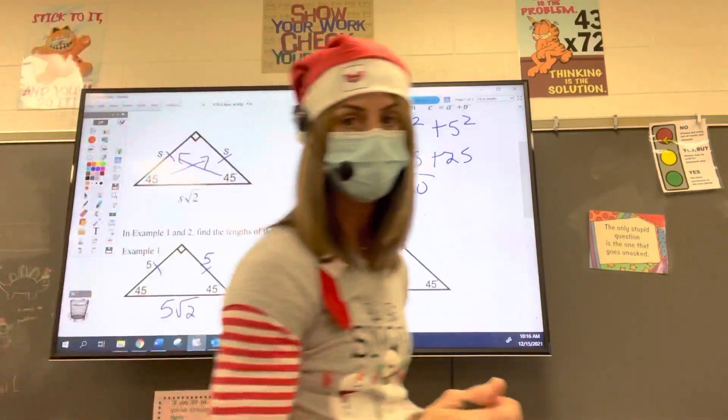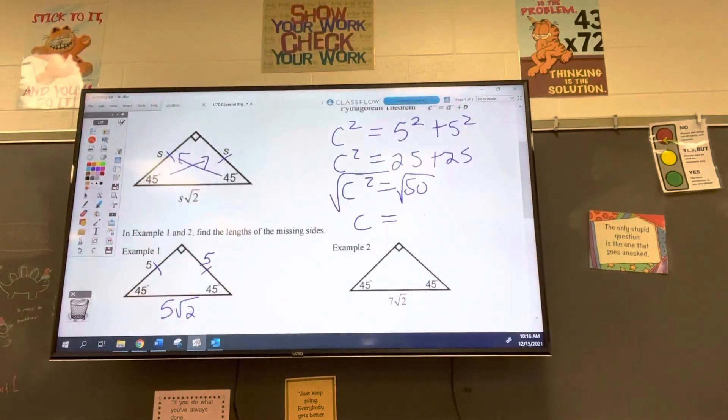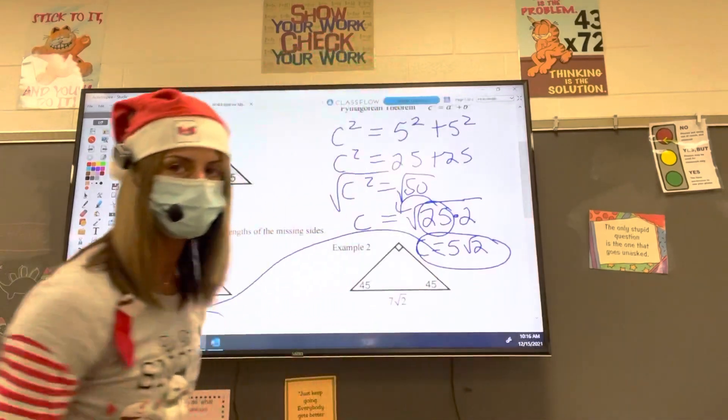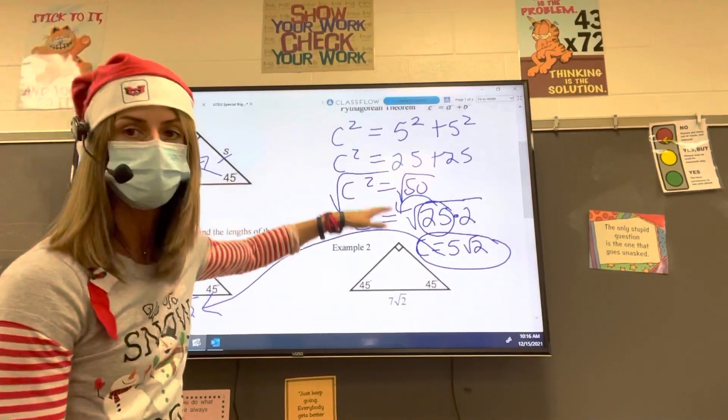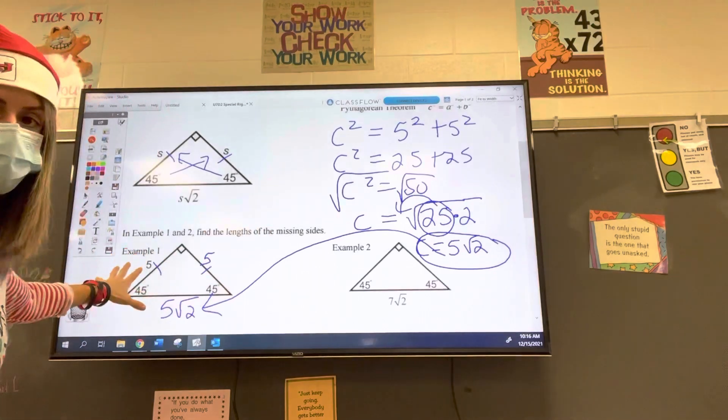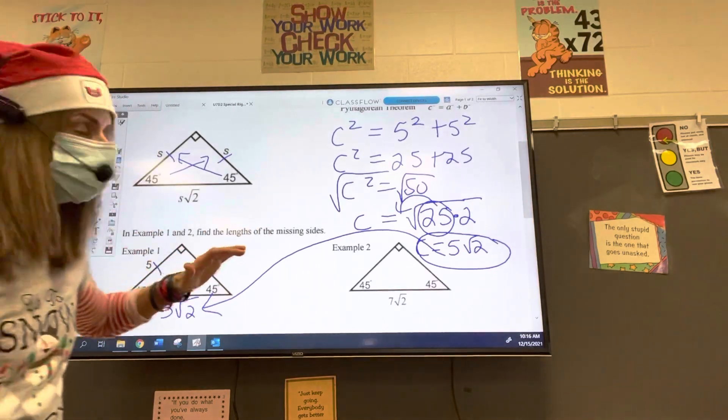The largest perfect square that goes into 50 is 25 because 25 times 2 is 50. So I'm going to break up the 50 into 25 times 2. And feel free to ask me a question while I'm doing this. 25 comes out. And that's 5 root 2, which we already knew because of the shortcut. So that's why we're learning special right triangles. So we don't have to go through all this because we already know and have this memorized this relationship.